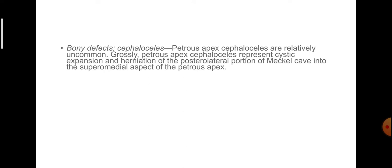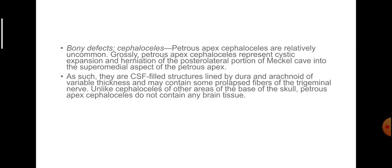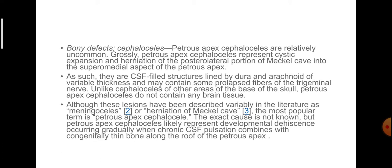Cephalocele: Bony defects in the petrous apex. Petrous apex cephaloceles are relatively uncommon. They represent cystic expansion and herniation of the posterolateral portion of Meckel's cave into the superomedial aspect of the petrous apex. As such, they are CSF-filled structures lined by dura and arachnoid of variable thickness and may contain some prolapsed fibers of the trigeminal nerve. Unlike cephaloceles of other areas of the skull base, petrous apex cephaloceles do not contain any brain tissue.